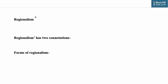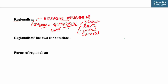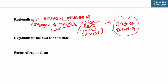Regionalism means excessive attachment to a particular region or state as against the country as a whole. A region is a territorial unit with dialect, ethnic group, social and cultural institutions, and a widely prevalent sentiment of togetherness. This creates a sense of identity which is as dear to people as their feeling of identity with a state, nation, religious group, or linguistic group. This gives rise to the concept of regionalism. The term regionalism has two connotations: negative and positive.